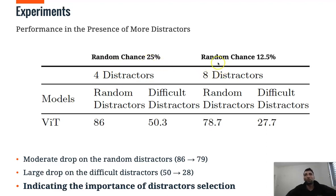And now we have 8 options. So we have a random chance of 12 and a half. And we see a moderate drop in the results of the random distractors from 86 to 79. But a much larger drop on the difficult distractors from 50 to 27. And it indicates the importance of the distractors selection.